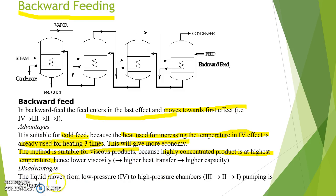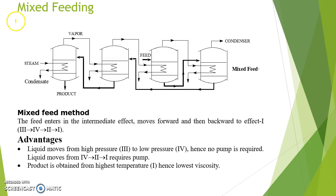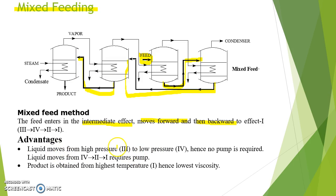The disadvantage of backward feeding is that liquid moves from low pressure to high pressure chambers, so pumping is required. In mixed feeding, the feed enters an intermediate effect, moves forward, and then backward to effect 1. In this diagram, feed enters the third effect, moves to the fourth effect, then from fourth to second, and second to first. The advantage is that liquid moves from high pressure to high pressure (third to fourth), so no pumping is required for that portion, though pumping is required from fourth to second to first. The product is obtained from the first effect at the highest temperature, hence lowest viscosity.